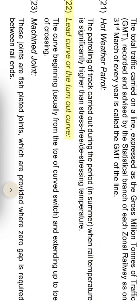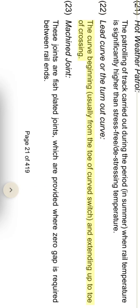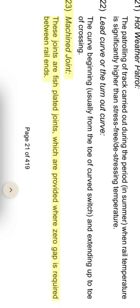Sleet curve or the turnout curve: the curve beginning usually from the toe of the curved switch and extending up to the toe of crossing. Insulated machine joint: these joints are fish plate joints which are provided where zero gap is required between rail ends.